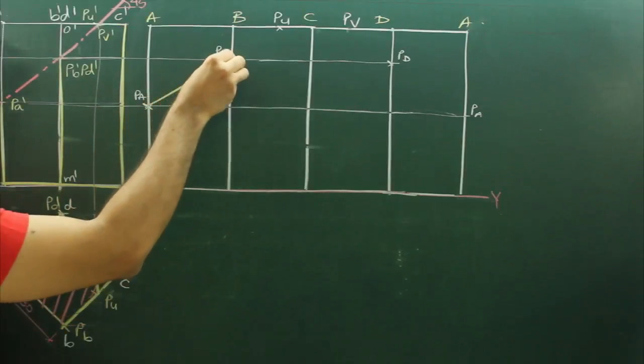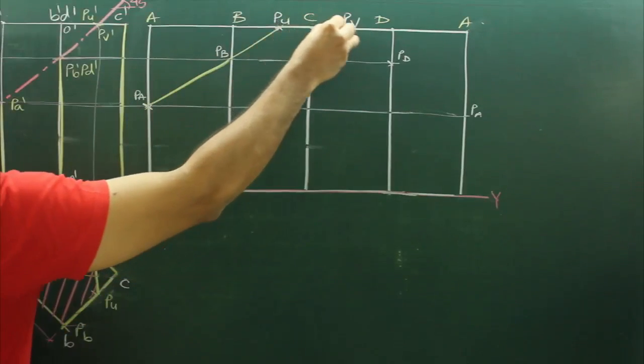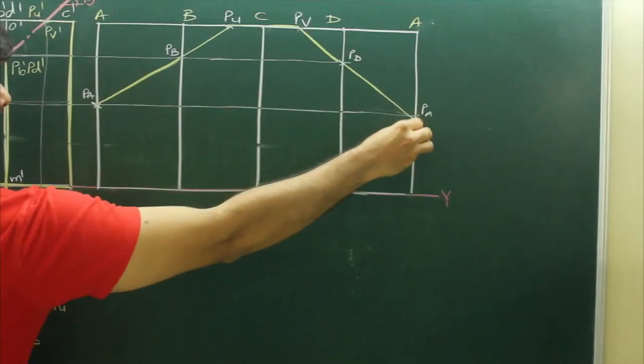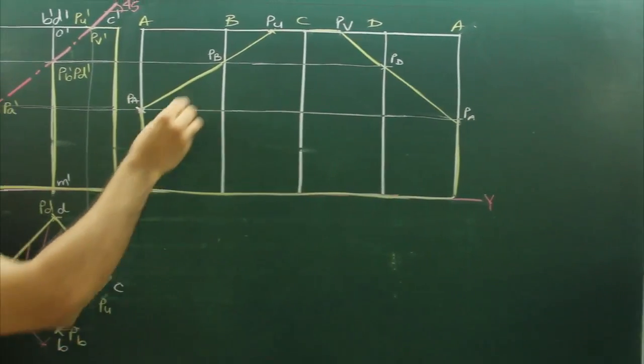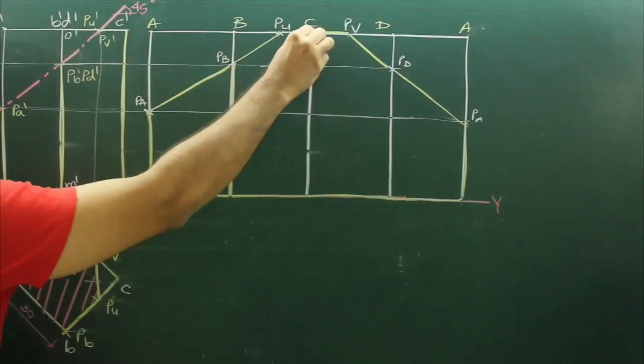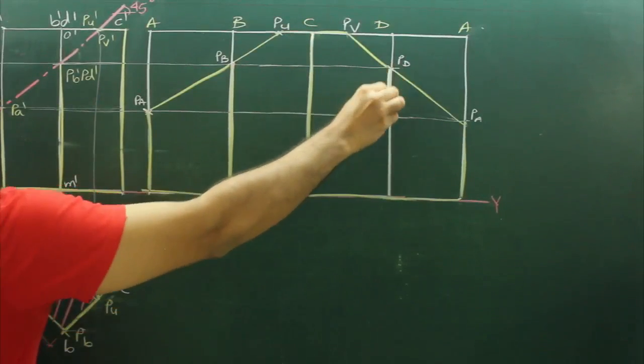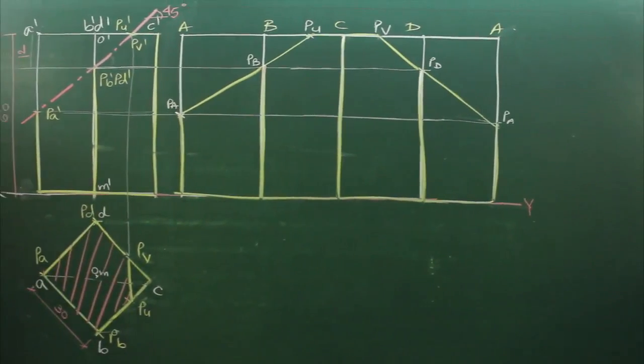Now join this with a straight line. This much portion will be dotted, rest all will be left.